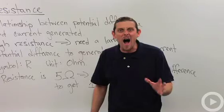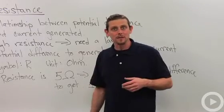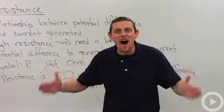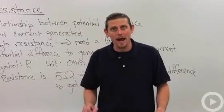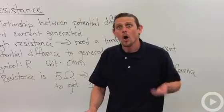If I've got a five ohm resistance then it means I need five volts of potential difference to generate one amp of current.